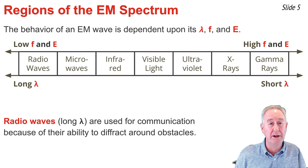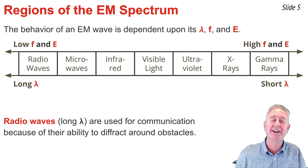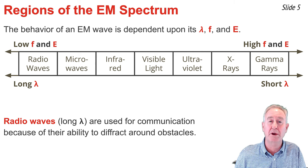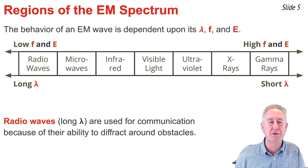For this reason, the long wavelength radio waves are commonly used in communication devices such as cell phones. Their ability to diffract around buildings and bend through openings makes them perfect for the use of communication.